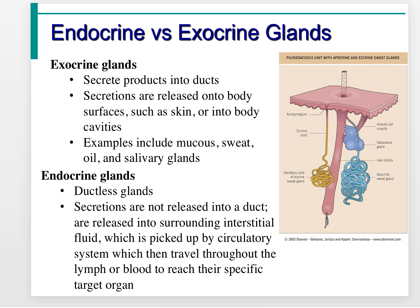Exocrine glands are glands that secrete their product into a duct — examples include sweat glands, salivary glands, and sebaceous glands. Endocrine glands are ductless glands; they secrete into the interstitial fluid, which is picked up by the circulatory system and goes directly into the blood, then travels through blood vessels to reach a specific target organ.